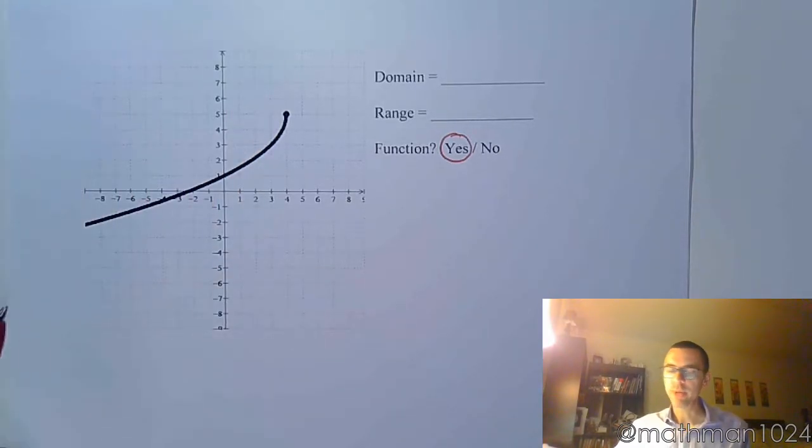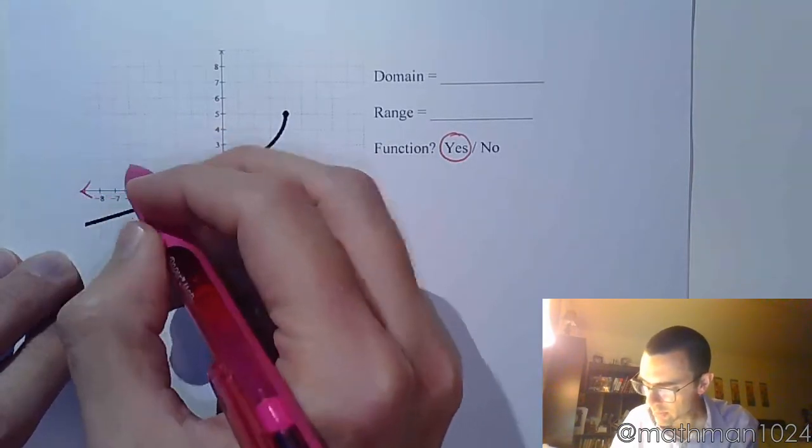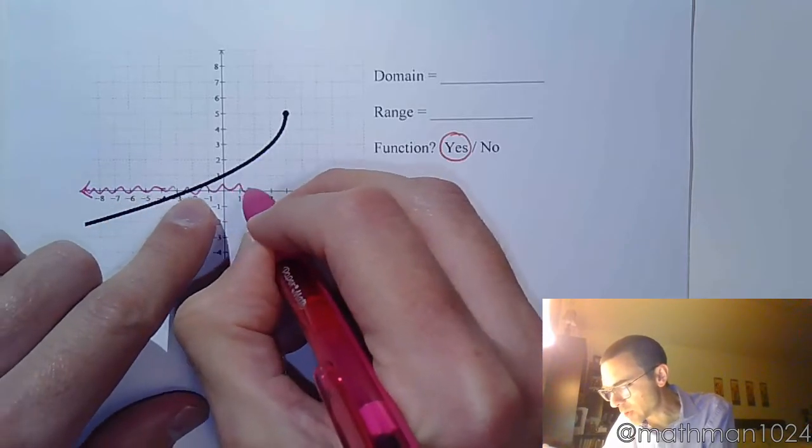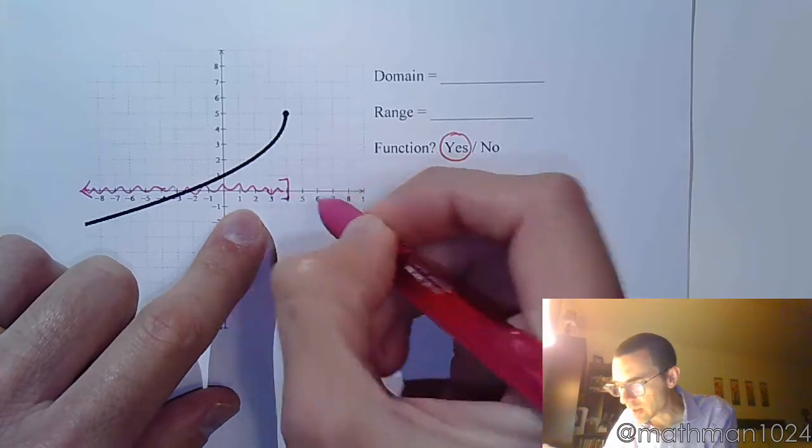And what about the domain? As I go from left to right, what am I using? Well, he goes all the way left, and he keeps going, going, and going to the right until he gets to this x value of 4.